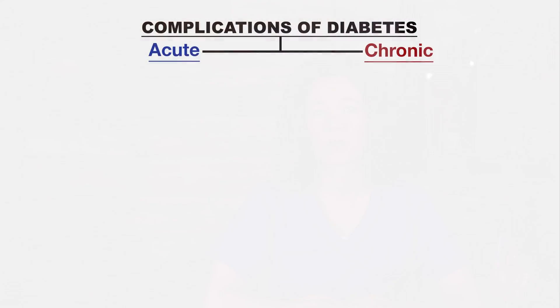Welcome to this video tutorial on the complications of diabetes. Diabetes is a group of metabolic diseases characterized by hyperglycemia, or high blood sugar, that results from defects in insulin secretion, insulin action, or both, and affects multiple systems of the body. Uncontrolled diabetes can cause metabolic imbalance leading to acute complications requiring immediate medical attention.